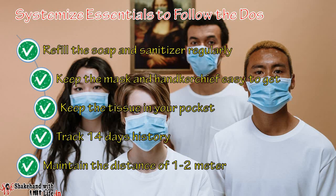Now come to the second S: Systemization. It means to set things in an order of use. Keep soap and sanitizer in washrooms at an optimum level to wash hands frequently for 20 seconds daily. Keep the mask or handkerchief at a place where you can get it easily. Keep tissue paper in your pocket and throw it in a covered dustbin after use. Make a list of people you are meeting daily to track your 14-day history. Stay at a distance of one to two meters while gathering at the workplace if not possible to avoid.